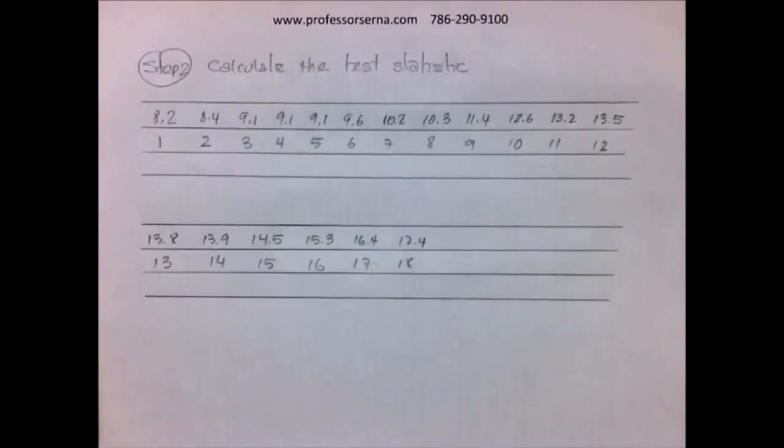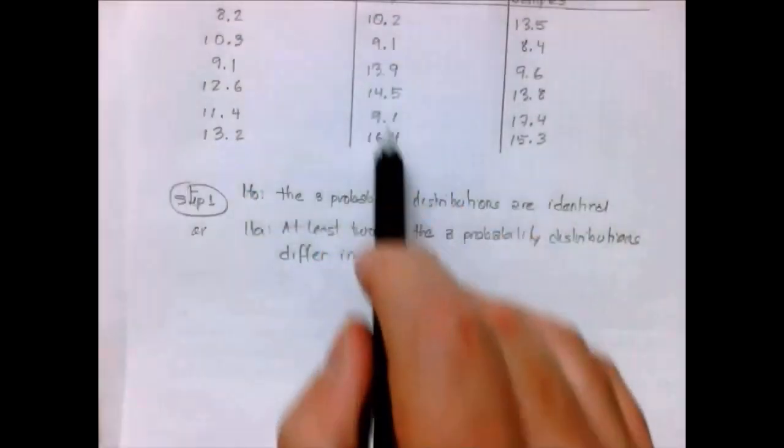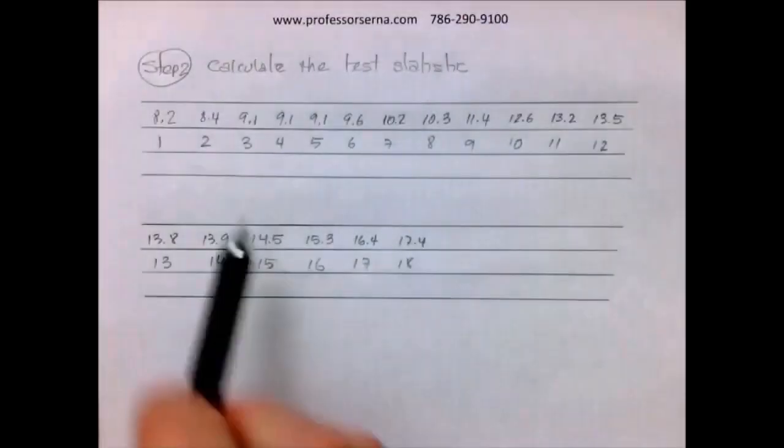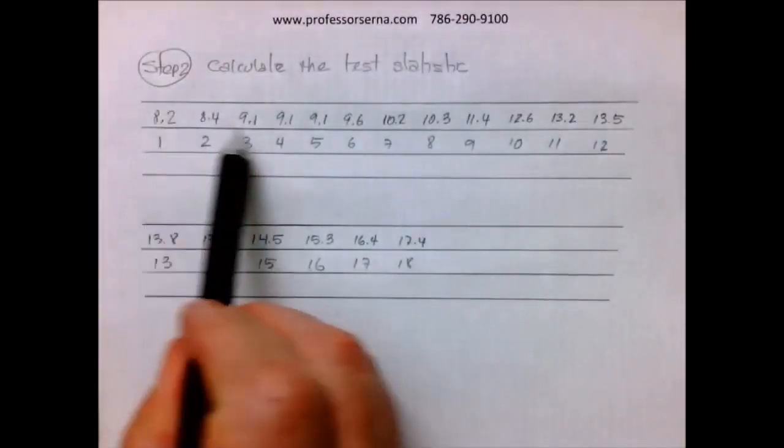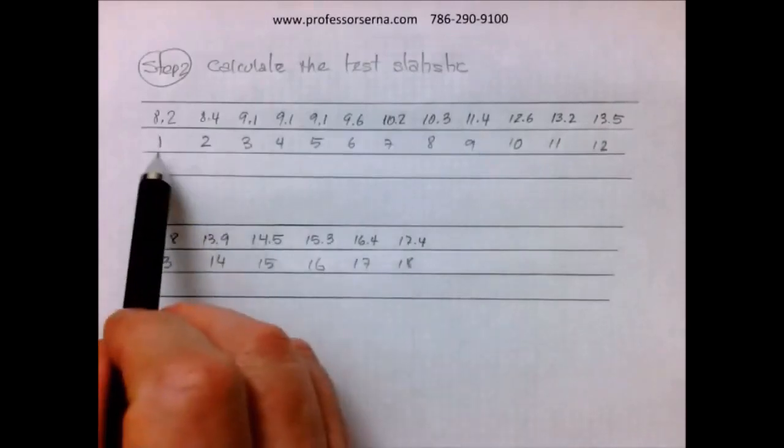The next step is to calculate the test statistic, similar to what we did for the Wilcoxon rank sum test. What we do is put all the observations together and sort them from smallest to largest.